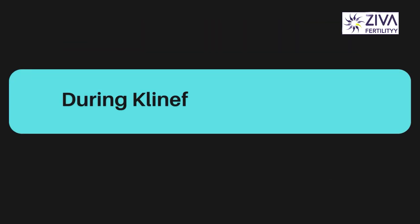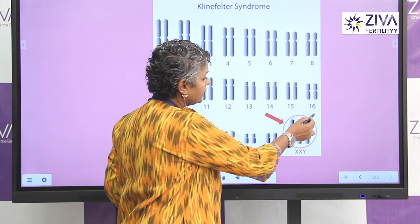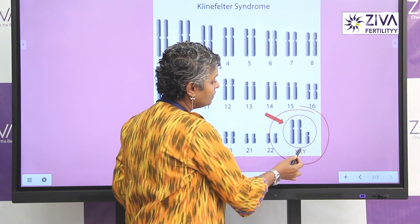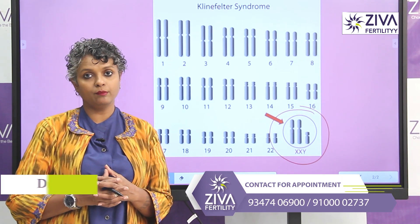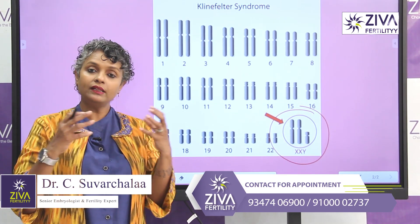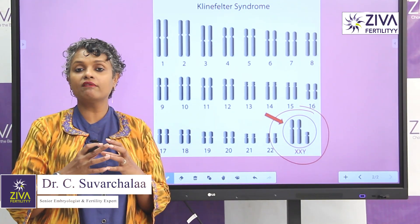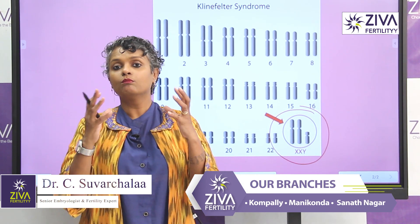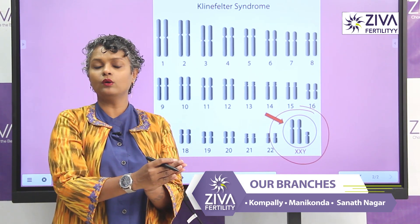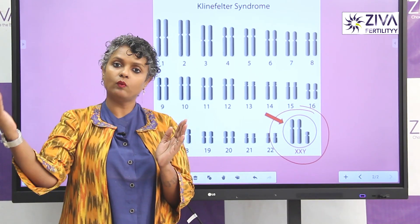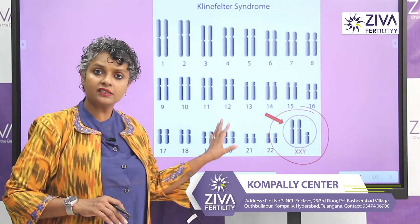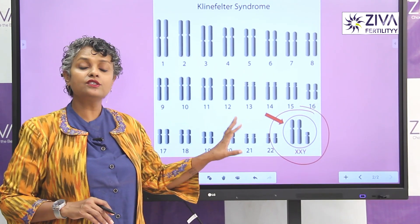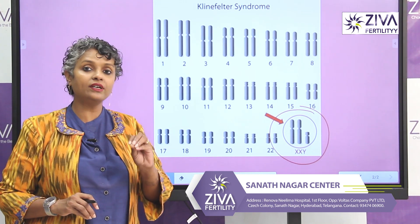During Klinefelter Syndrome, the issue is that two X chromosomes and one Y chromosome are formed in the embryo. While the separation should have happened of the two X chromosomes, both X chromosomes came into the embryo and one Y came from the male. In this case, instead of 46 chromosomes, there are 47.